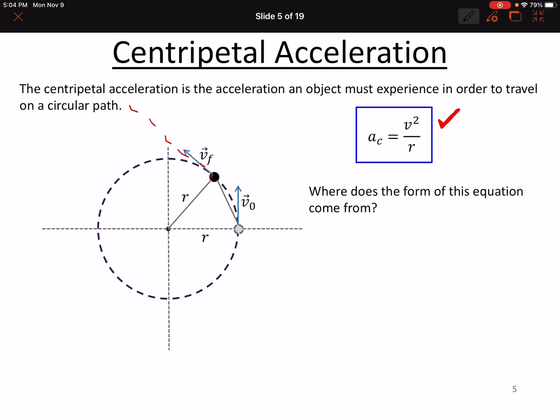And the velocity has changed direction somewhat. And we form a little triangle here between the two objects' positions, initially and finally.